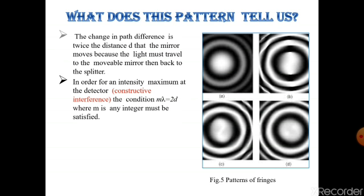In order for an intensity maximum at the detector (constructive interference), the condition mλ = 2d, where m is an integer.